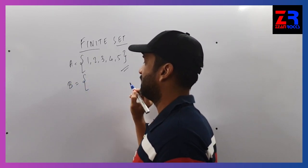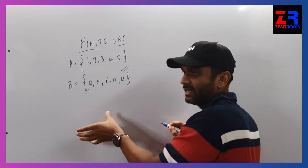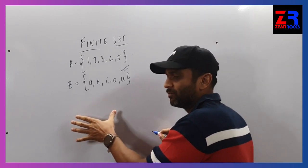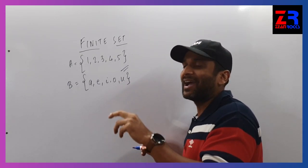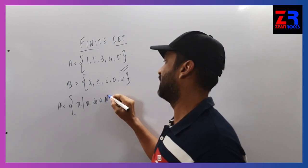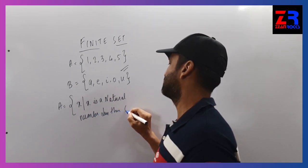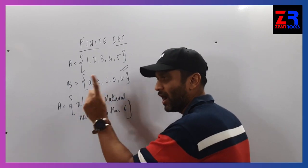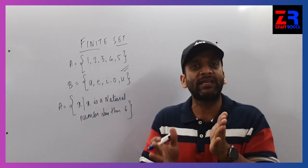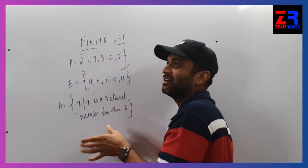Set B = {a, e, i, o, u} - finite set, we can count. C = {January, February, March, April, May, June, ..., December} - months, we can count, finite set. A is equal to X such that X is a natural number less than 6. Natural numbers: 1, 2, 3, 4, 5 - less than 6, so it gives {1, 2, 3, 4, 5}. That means this set is a finite set.